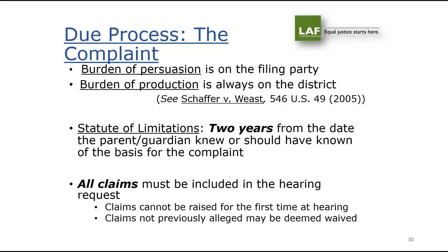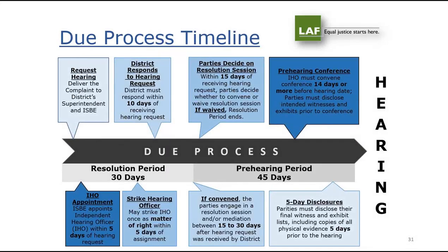The burden of persuasion is on the filing party; the burden of production is on the district. The statute of limitations is two years from when the parent knew or should have known the basis of the complaint. All claims must be included in the hearing request — you cannot raise new claims for the first time at hearing, and previously available claims may be deemed waived. Most hearing officers will allow amendments, but include all claims in your first complaint whenever possible.